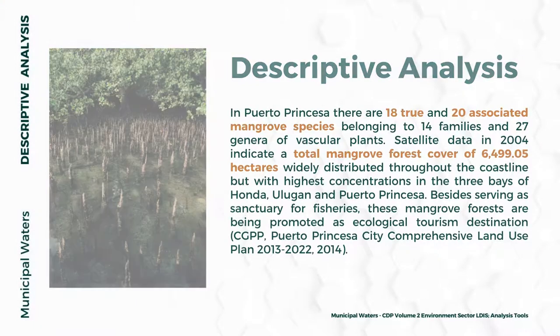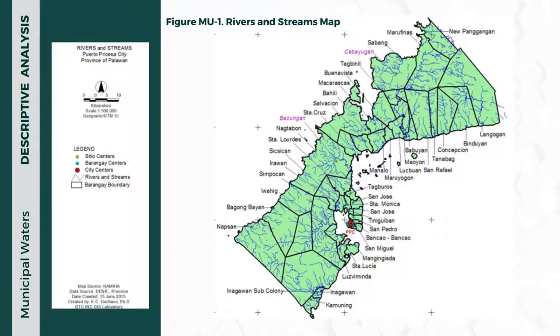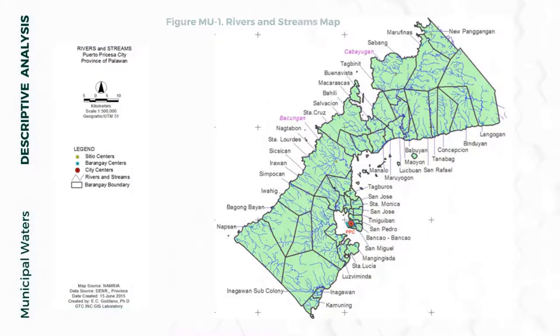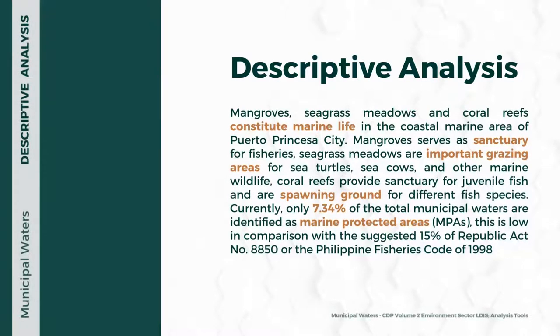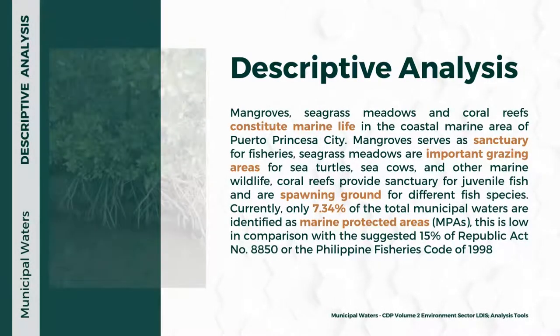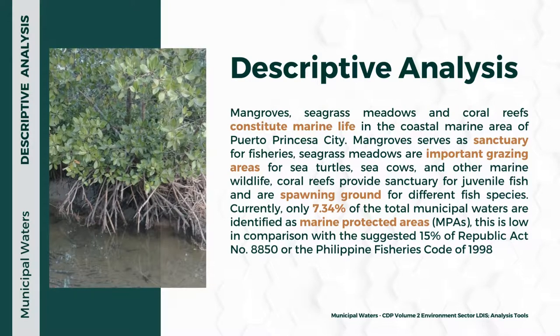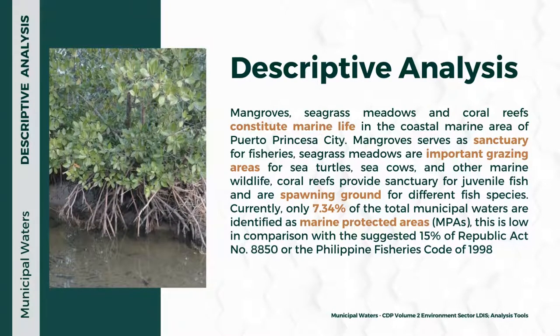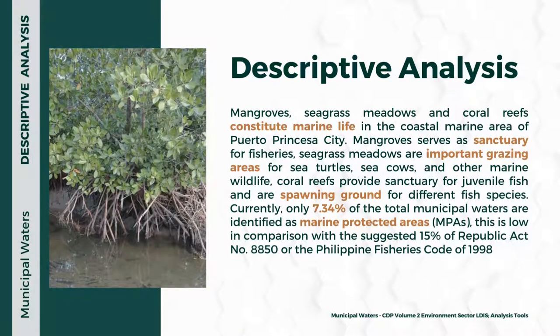These mangrove forests are being promoted as ecological tourism destinations. Mangroves, sea grass meadows, and coral reefs constitute marine life in the coastal marine area of Puerto Princesa. Mangroves serve as sanctuary for fisheries and important grazing areas for sea turtles and other marine wildlife. Coral reefs provide sanctuary for juvenile fish and serve as spawning grounds for different fish species. Currently, only 7.34% of total municipal waters are identified as marine protected areas, which is low compared to the suggested 50% under Republic Act 8850, the Philippine Fisheries Code.